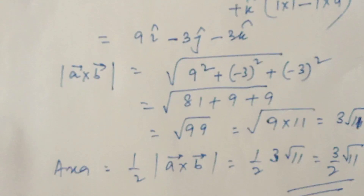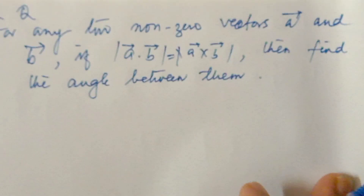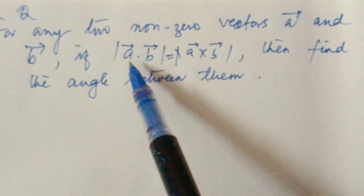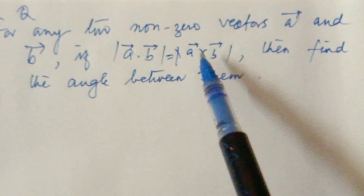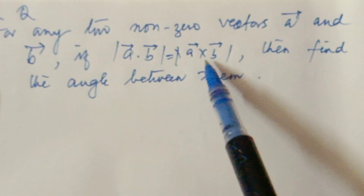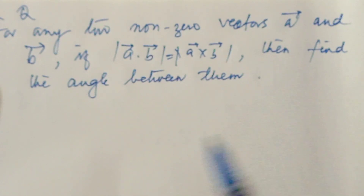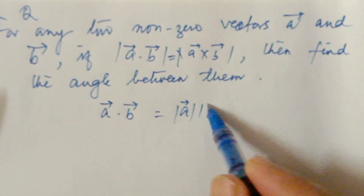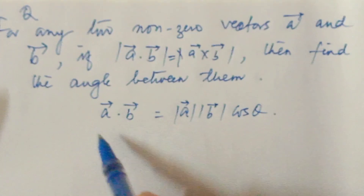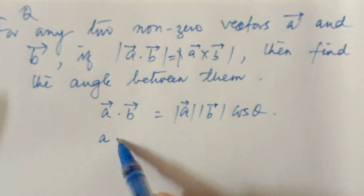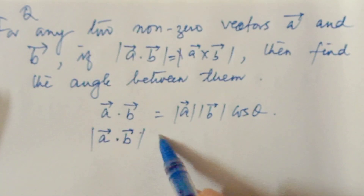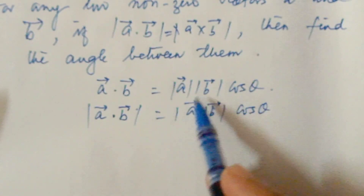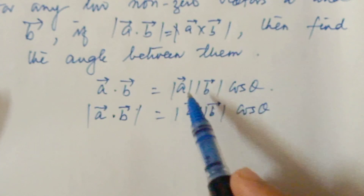Now I will solve one more question from the specimen paper. The question is: for any two nonzero vectors a and b, if the magnitude of a dot b is equal to the magnitude of a cross b, then find the angle between them. We know a dot b equals magnitude of a times magnitude of b times cos theta.